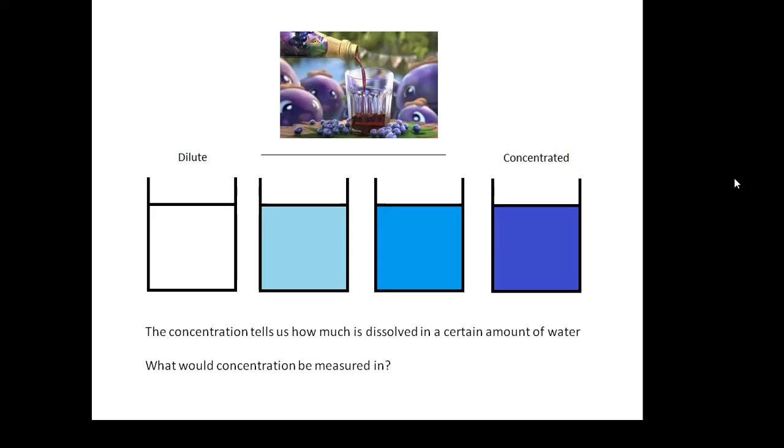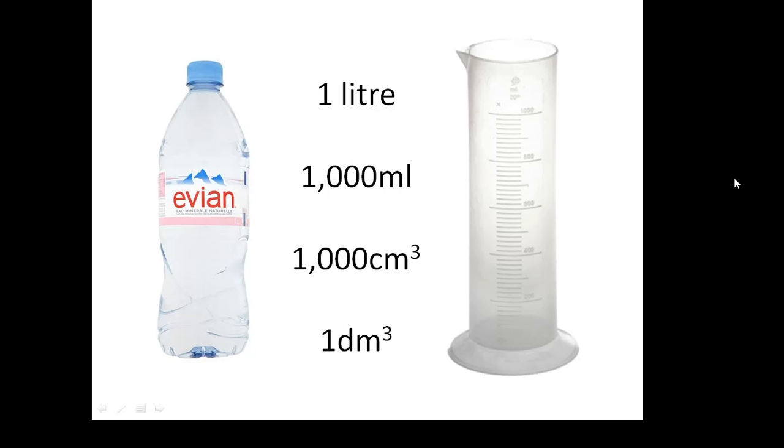What would concentration be measured in? The amount of stuff dissolved in a certain amount of water. The amount of water is per litre. A litre is a thousand millilitres, or a thousand centimetres cubed, or one decimetre cubed (dm³). They use that in chemistry quite a bit.